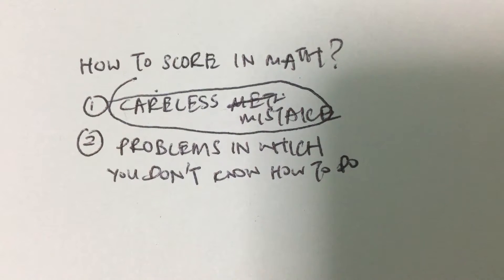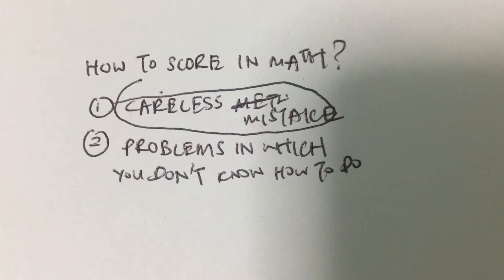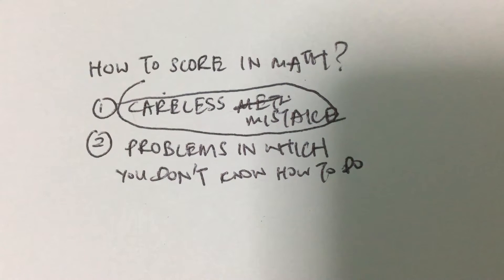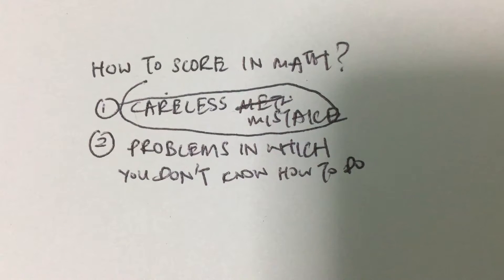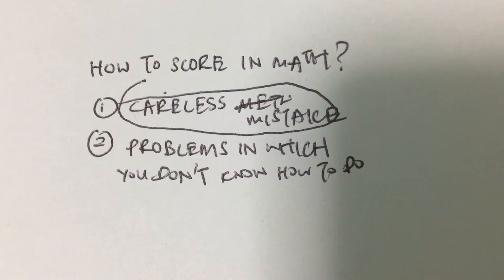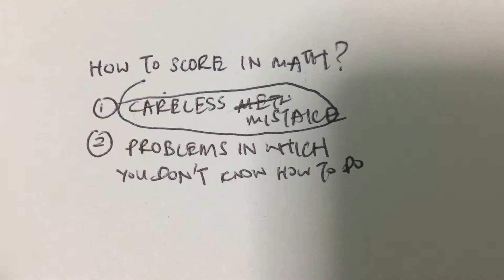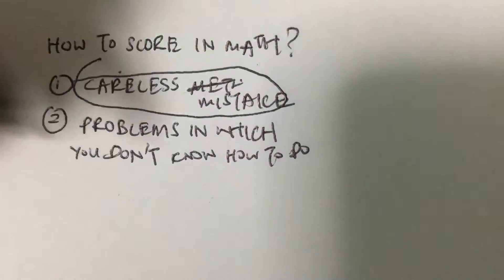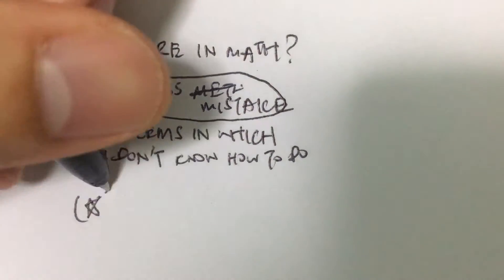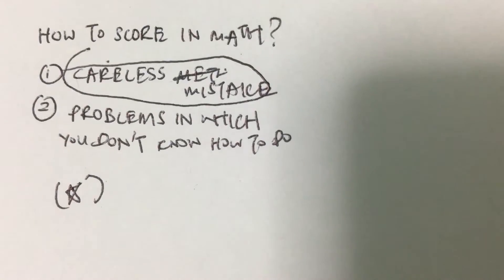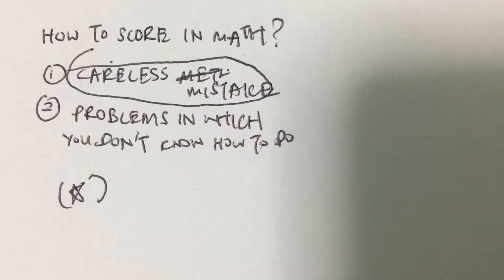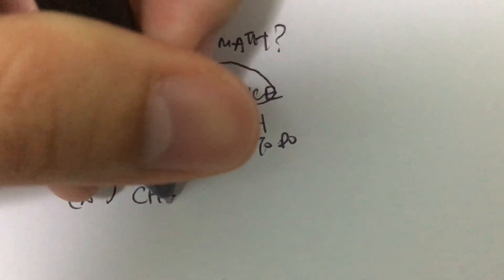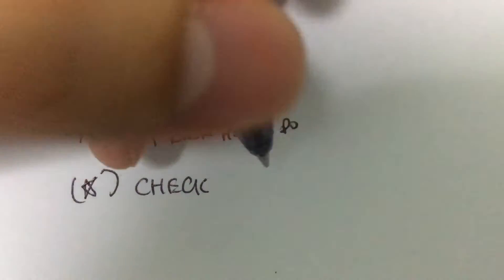Imagine if you could have scored A's and B's, but it turns out that because you made a lot of careless mistakes, you scored C's and D's. The key thing to take away to actually prevent yourself from making mistakes is to make sure that you check every problem one more time.